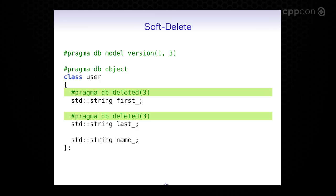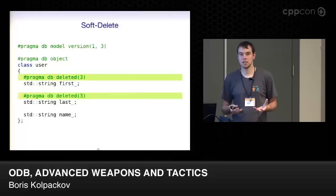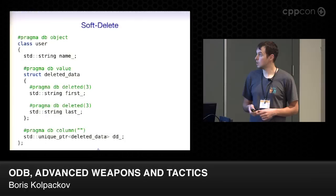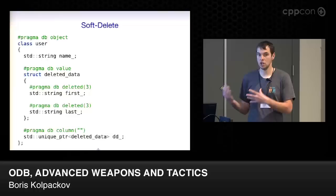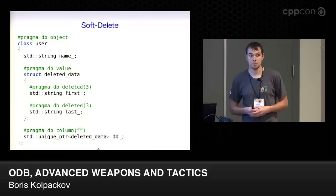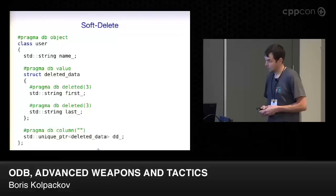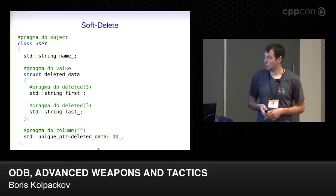The problem with this approach is that we now have data members that are not really used during normal application runs — they just take up memory. To rectify this, we can move all of them into a composite value type and use something like a unique pointer for it. During data migration, ODB will automatically allocate a dynamic instance for this value type and load the data members. But during normal application runs, this pointer will remain null. So you get a single pointer for all your deleted data members.